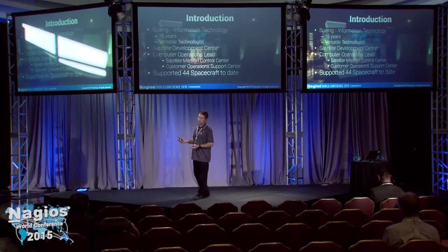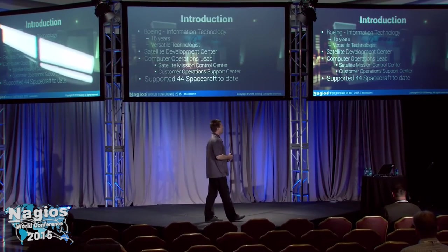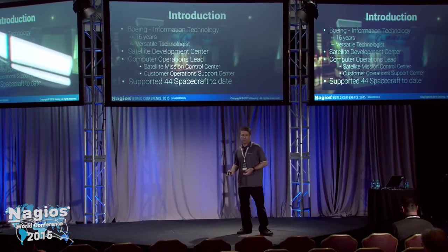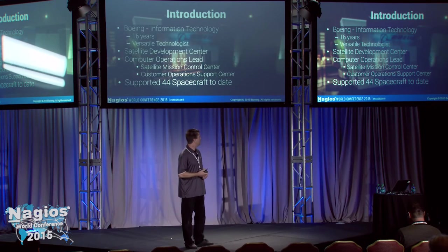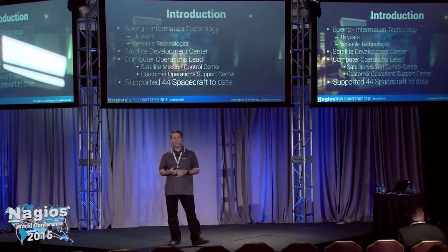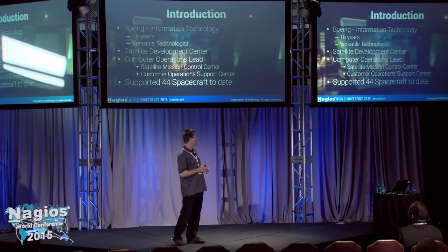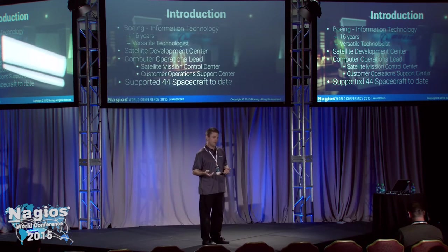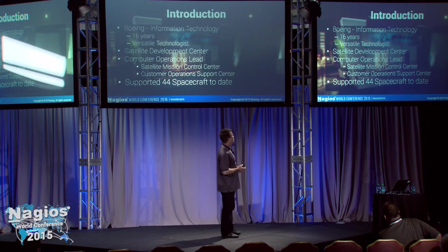We build, produce, and design satellites and put them up in space for our customers. My primary responsibility is the Mission Control Center computer operations lead — I manage a small group of four people who perform the job of delivering spacecraft on orbit to our customers. That's what our Mission Control Center does: from the launch vehicle to delivering the spacecraft on orbit, we command, control, and operate the spacecraft, perform on-orbit tests, and deliver it to our customer.